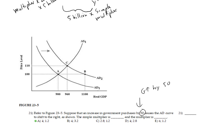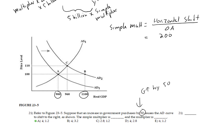We know that the horizontal shift to the right for this AD curve is 200. To find the simple multiplier, we take this horizontal shift — 200, which is 1100 minus 900, the distance between points a and b — divided by the change in A. Since G is increasing by 50, that corresponds to a change in A equal to 50. So the simple multiplier equals 200 divided by 50, which equals 4.